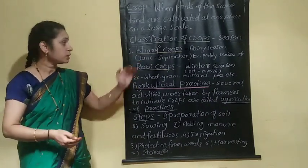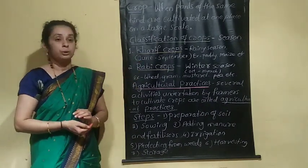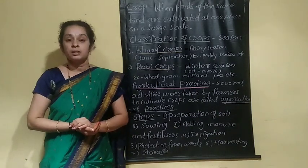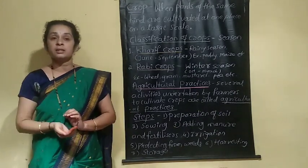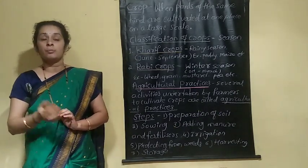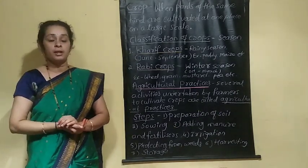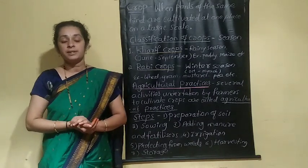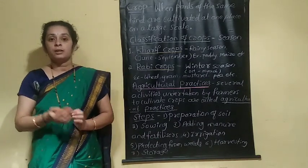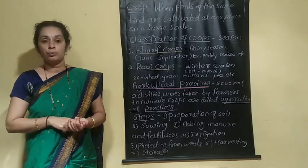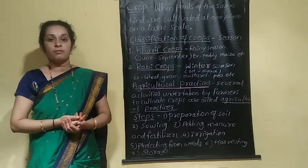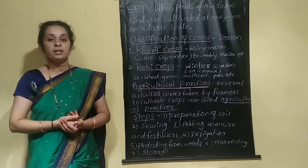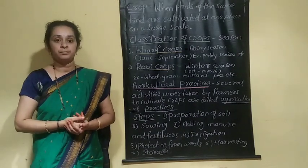Besides these two types of crops, in the summer season also some crops are grown — for example, vegetables, fruits, and flowers are also grown in the summer season.